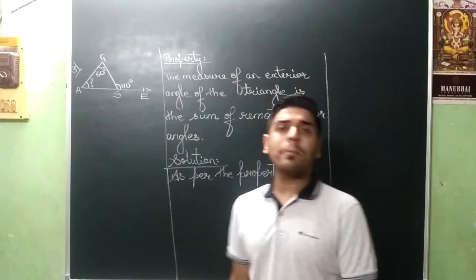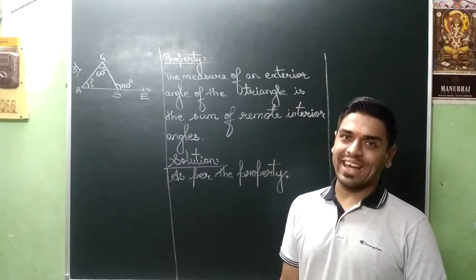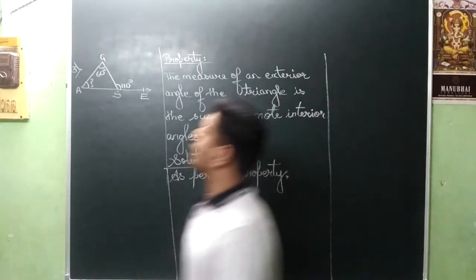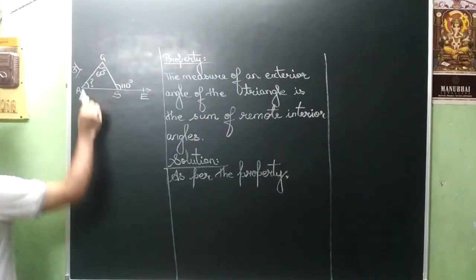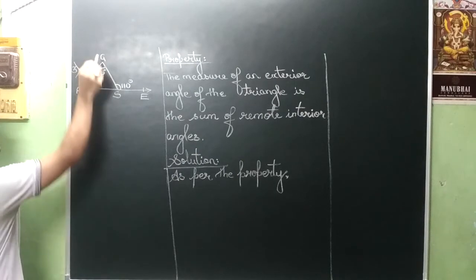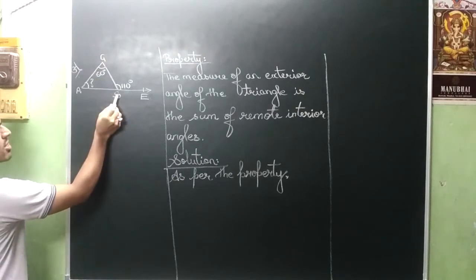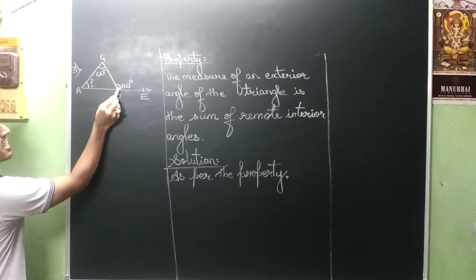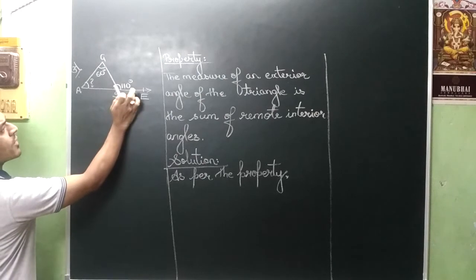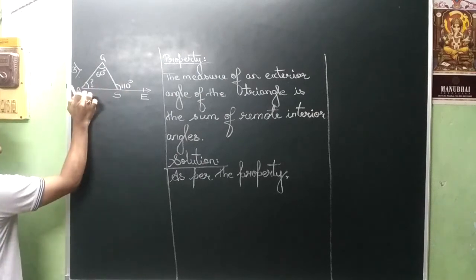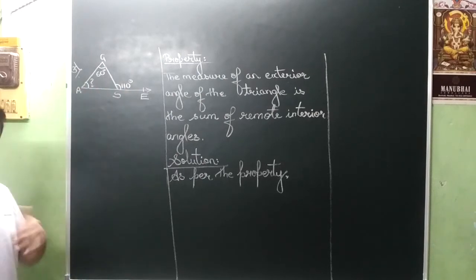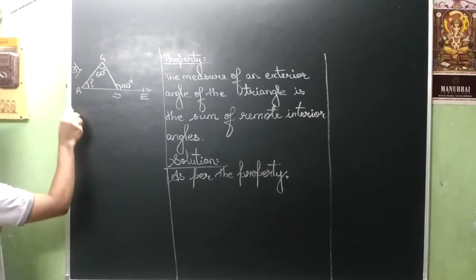Welcome back class, now let's go to the third sum. You can see there is one triangle, the name of the triangle is GAS, in which exterior angle measure is given to you, one remote interior angle measure is to be found. So now let us begin.